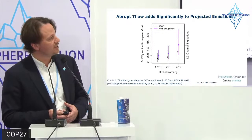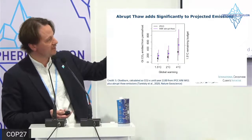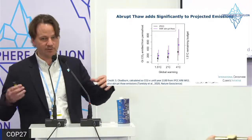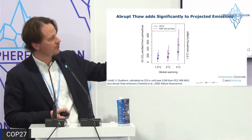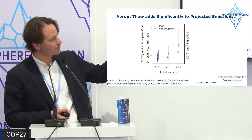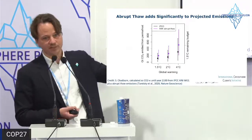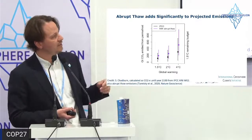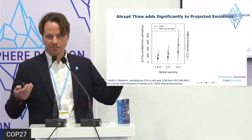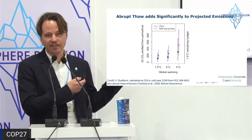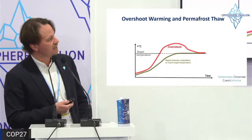Adding abrupt tipping elements into projected emissions from thawing permafrost: the black dot shows what the IPCC projects with mainly gradual thaw, but if you add abrupt thaw happening across the Arctic you get the purple dots — almost a doubling of emissions from these systems, measured in gigatons of CO2 equivalents including both CO2 and methane. Even though there's not a pan-Arctic tipping point in permafrost extent, these local tipping points matter a lot to the global carbon budget.